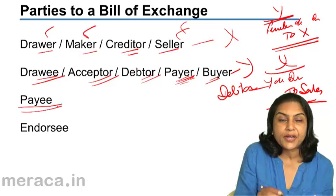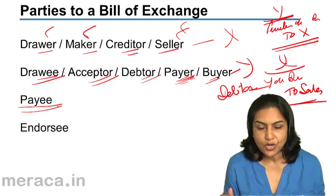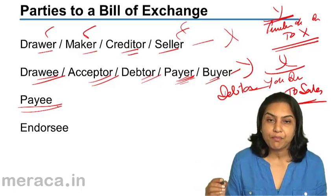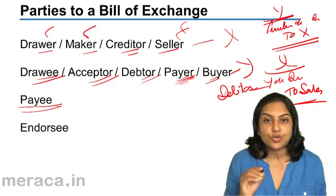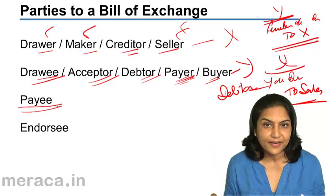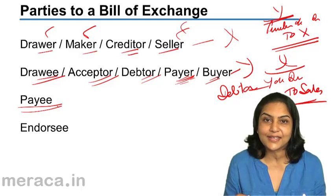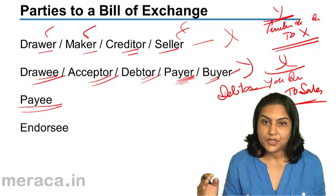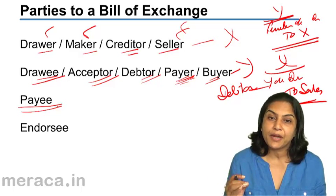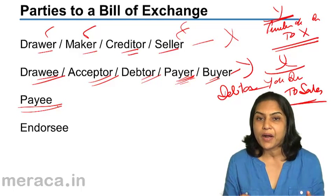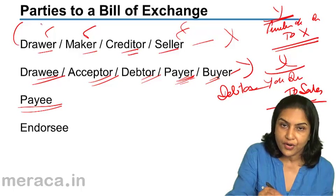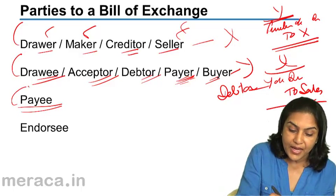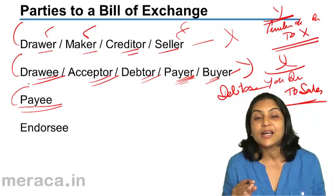We have mentioned a payee separately here, because in the bill of exchange specimen we saw, it said 'three months from now, pay Sohan or order,' and it was made by Sohan. But it is quite possible that instead of saying 'pay Sohan,' he may say 'pay X' or 'pay Y' or 'pay Z.' So in a bill of exchange, he may instruct the person on whom the bill is drawn to make payment to anybody else. There are actually three parties to a bill of exchange.